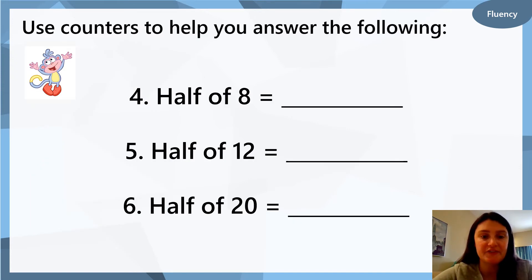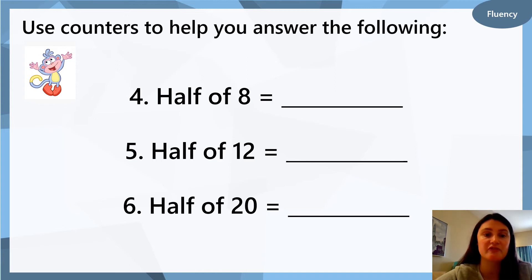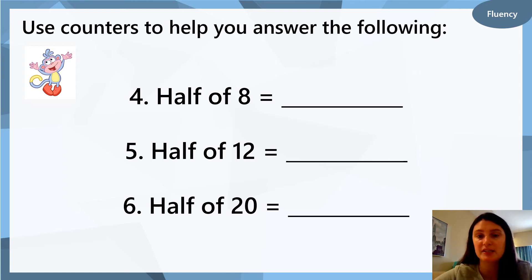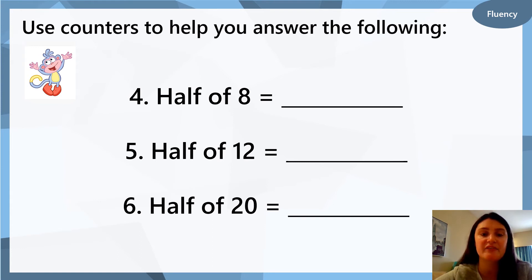Okay, for questions four, five, and six, you can use counters or you can draw dots and circles to help answer the following. Question four: half of eight. Question five: half of twelve. Question six: half of twenty. For each question you need your two big circles — eight dots for question four, twelve dots for question five, and twenty dots for question six. Pause the video now while you find your answers and write the sentences for questions four, five, and six.